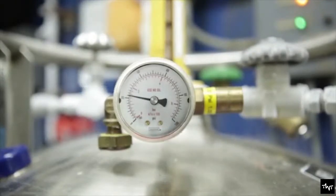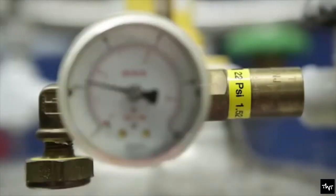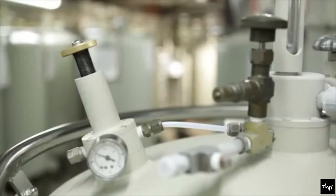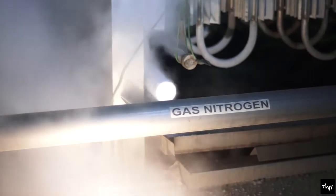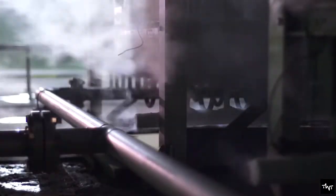For oxygen enrichment, the PSA is generally pressurized to a minimum of 1.5 atmospheric pressure. After a certain volume of air has been separated, the zeolite will become saturated with nitrogen.